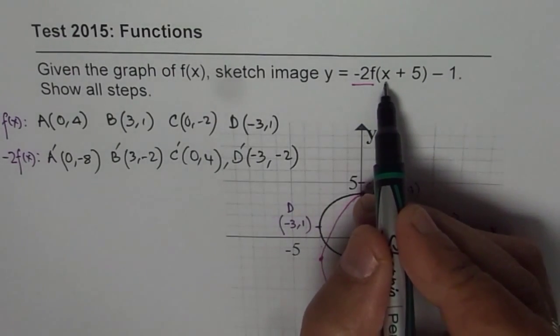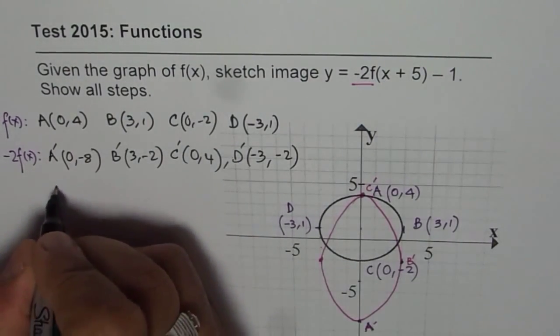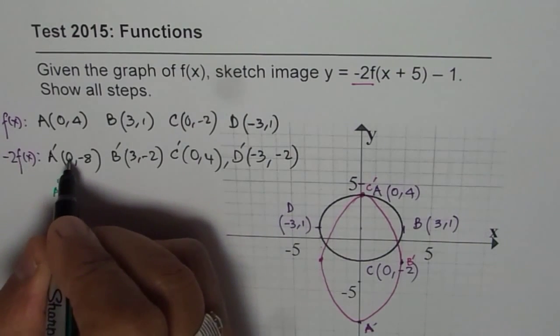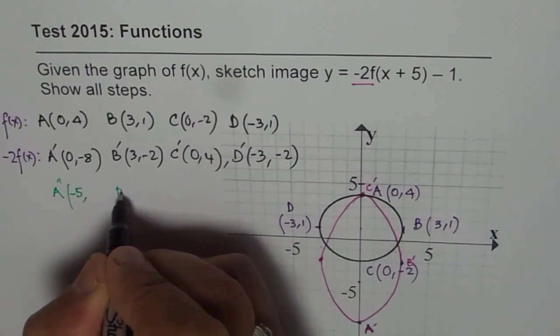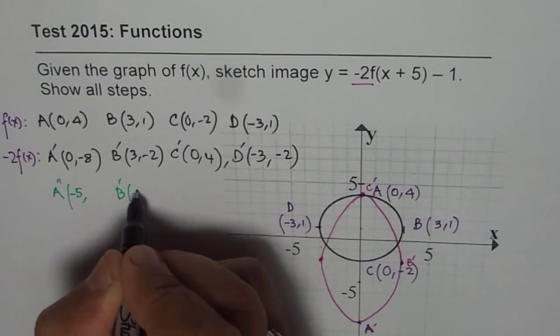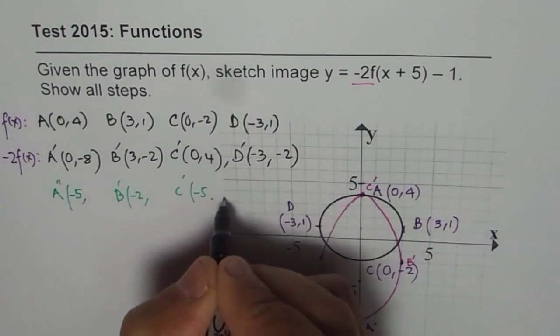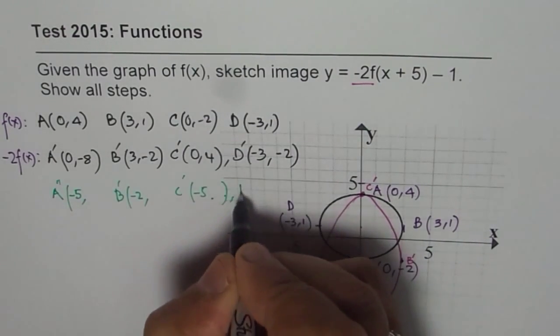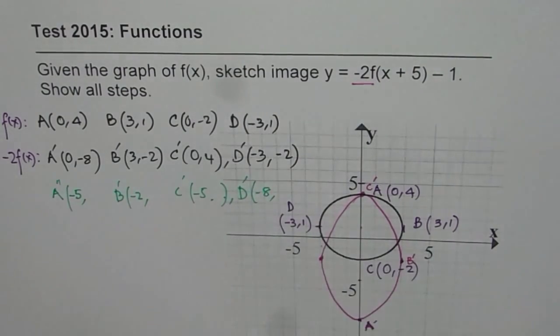So we'll do, for X, we are translating 5 units left. That means minus 5. So I'm writing A double dash, minus 5 for each X value. So that is minus 5. And for B dash, minus 5 will give us minus 2. For C dash, minus 5. And for D dash, minus 5 will mean minus 8. So we got the X location.